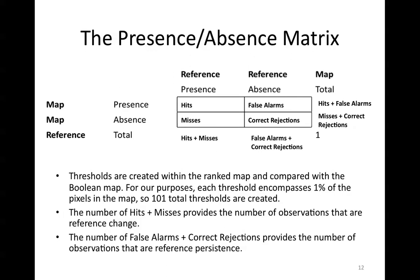The presence-absence matrix serves as the backbone of both the ROC and the TOC. The basic idea is that some input index map is compared with a boolean map. Thresholds are created within the index map and a presence-absence matrix is created at each threshold. The outcome of each matrix can be plotted graphically. It is important to note that each threshold can produce hits, misses, false alarms, and correct rejections. In our example, the index map is the soft output, and the boolean map will show change between 1985 and 1999, where a value of 1 indicates change and a value of 0 indicates no change, or persistence. The number of hits plus misses provides the number of observations with referenced change, and the number of false alarms plus correct rejections provides the number of observations with referenced persistence.